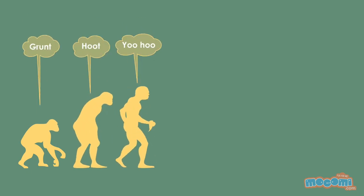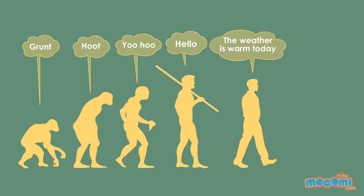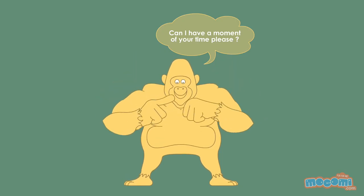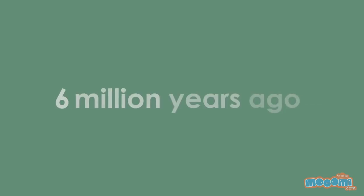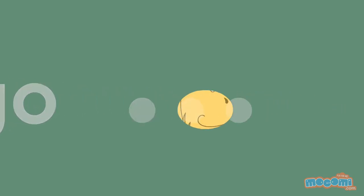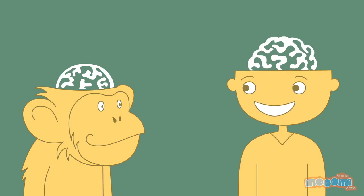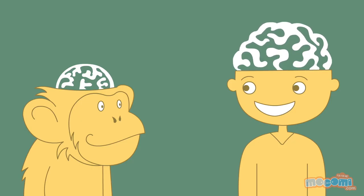One theory is that hominids, our human ancestors, started grunting, hooting and crying out and this gradually developed into the language we use today. But apes could grunt and hoot as well. Why did their grunting not evolve into a language? Because six million years ago, the hominid and chimpanzee lines diverged. The size of the hominid brain increased and developed over time, while chimpanzee brain remained the same.